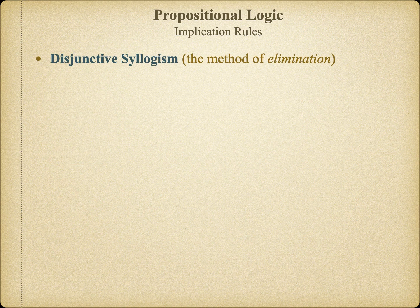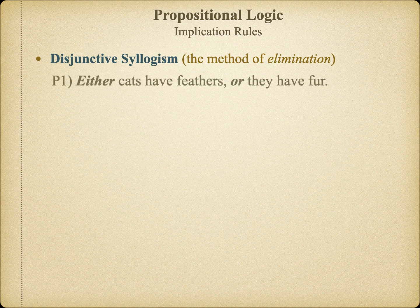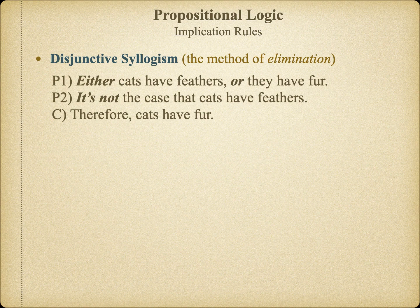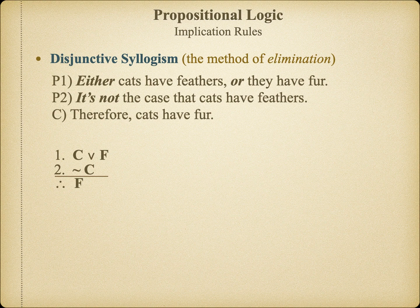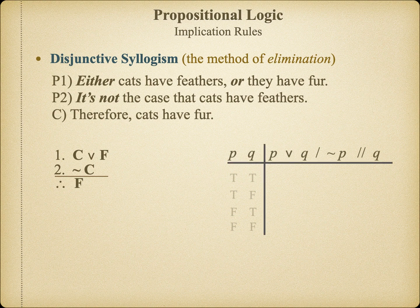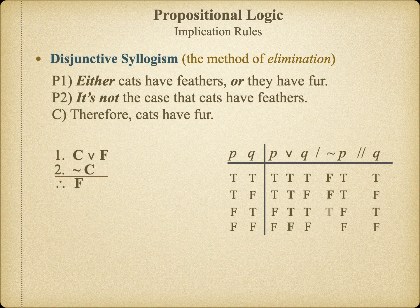Our final implication rule for this mini-lecture is the disjunctive syllogism. It's essential to keep in mind that the disjunction of two statements tells us that at least one of the disjuncts must be true, but it doesn't tell us which one is true. Thus, in order to derive anything from a disjunction, we're going to have to eliminate one of the possibilities. In its symbolic form, the logic of the disjunctive syllogism becomes quite clear. Since I don't know whether C or F is true, but I do know that one of them must be true, if I eliminate one of the possibilities — exactly what we're doing in the second premise — I know that the alternative must be the case. Our truth table bears out the validity of the argument.